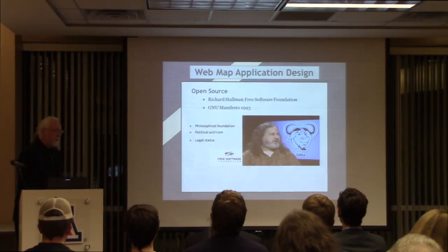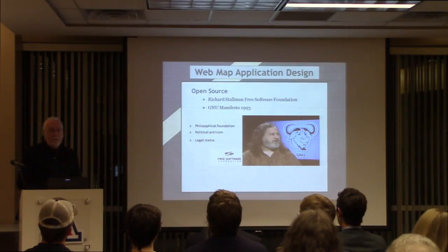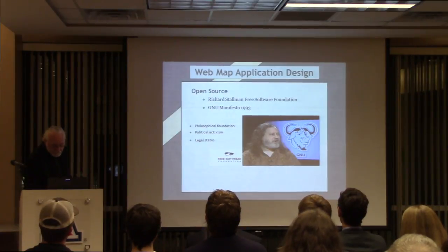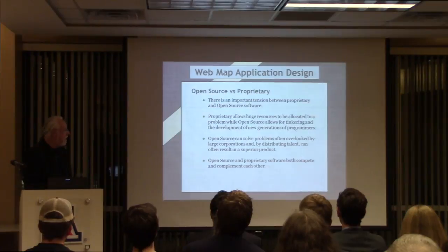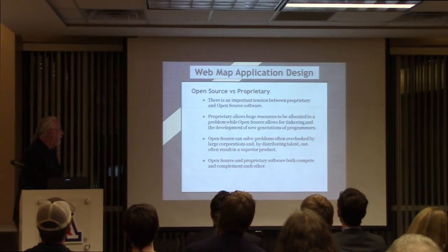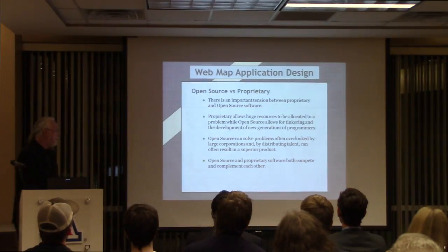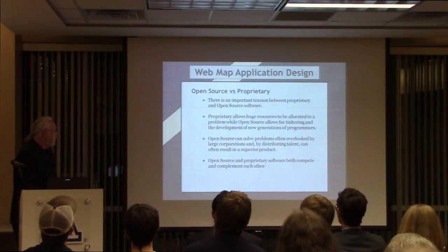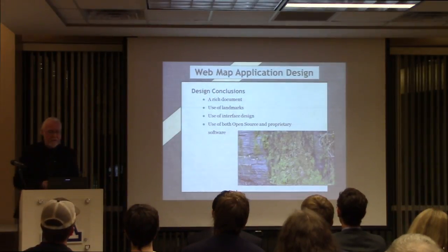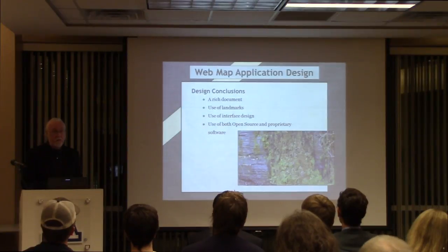Open source. Richard Stallman, the Free Software Foundation, the GNU Manifesto, 1993 — this set the philosophical foundation, the political activism, and the legal status of open source or free software. Mostly people call it open source now. There's an important tension between proprietary and open source software. Proprietary can have huge resources allocated to a problem, while open source allows for tinkering and development of new generations of programmers. Open source can solve problems often overlooked by large corporations, and by distributing talent can often result in a superior product — but often it can't. The conclusion: I want a rich document, use landmarks, use interface design, and use both open source and proprietary software — mostly OpenLayers and ArcGIS for JavaScript.